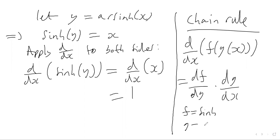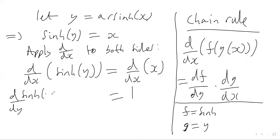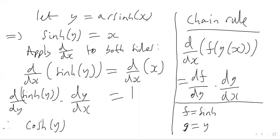Applying the chain rule to the left-hand side, we get d/dy of sinh(y), multiplied by dy/dx. We know from a previous video that the derivative of sinh(y) with respect to y is cosh(y). So the left-hand side becomes cosh(y) · dy/dx, and this equals 1.